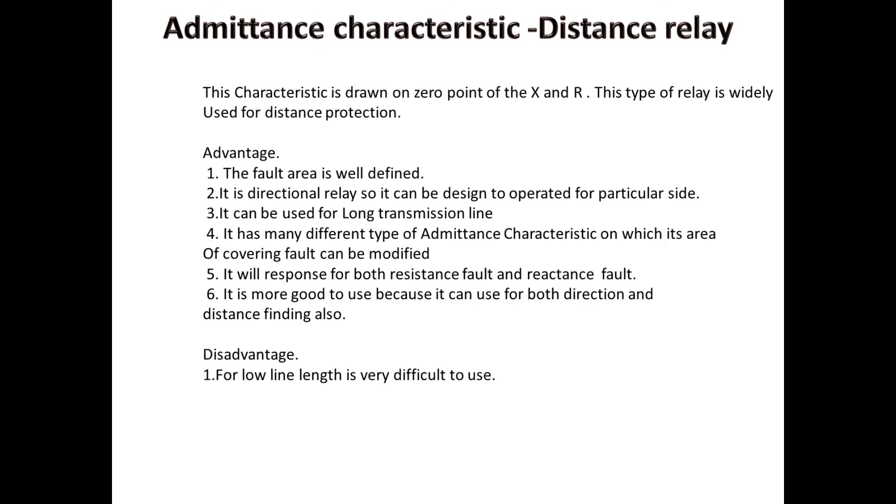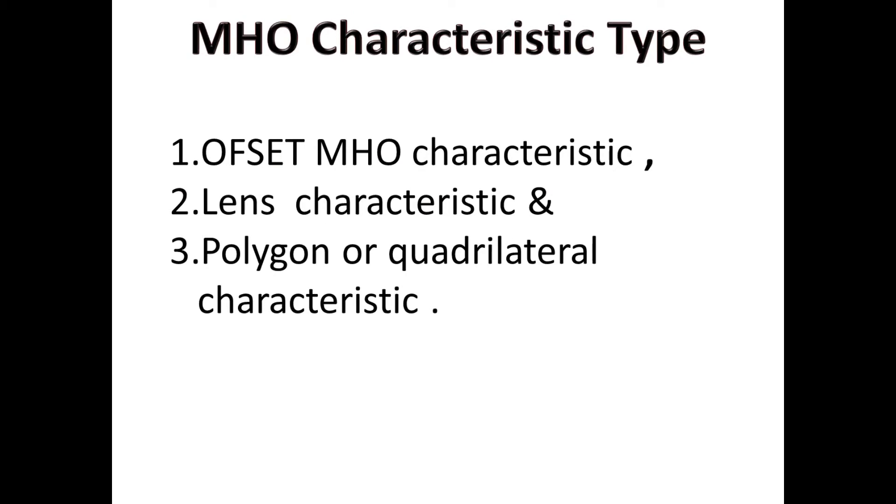So, this admittance relay is very important. Due to this, we can see a little bit deeper in admittance characteristics and the type of admittance characteristics. Most widely used types are shown here. First one is offset MOH characteristics. Second, lens characteristics. Third, quadrilateral characteristics.